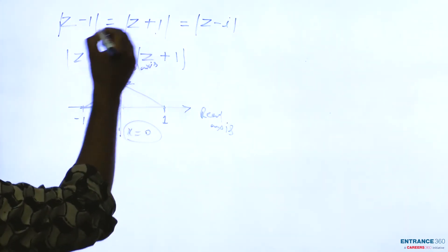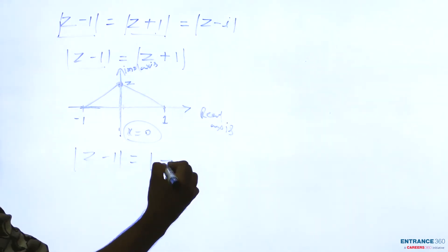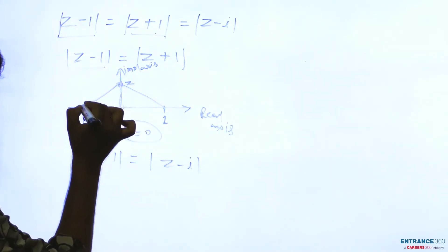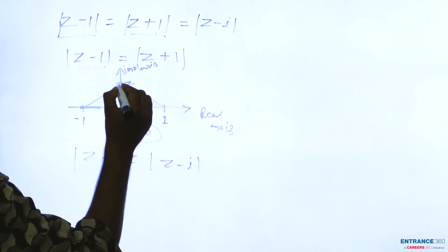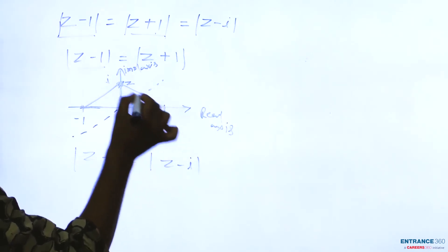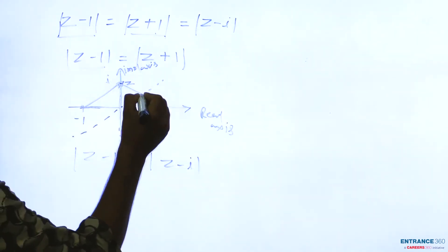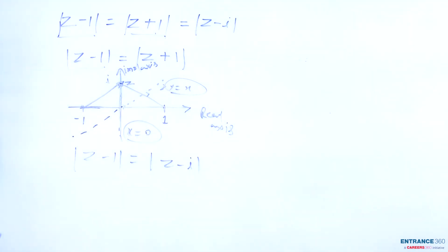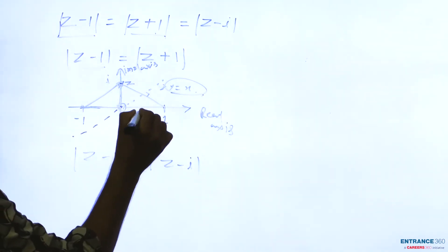For the condition |z - 1| = |z - i|: here z - 1 means the point 1, and z - i means the point i. The locus is also a perpendicular bisector, this time of 1 and i. The equation of this perpendicular bisector is y = x.